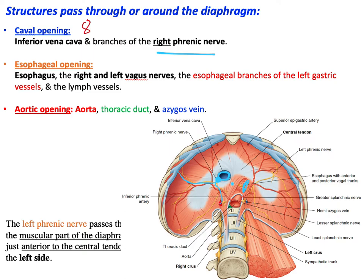For the esophageal opening at T10, the structures that pass through are the esophagus, the right vagus nerve, and the left vagus nerve. You also have a couple of small vessels called the esophageal branches of the left gastric vessels, which supply and drain blood from the lower abdominal part of the esophagus, as well as lymphatic vessels.